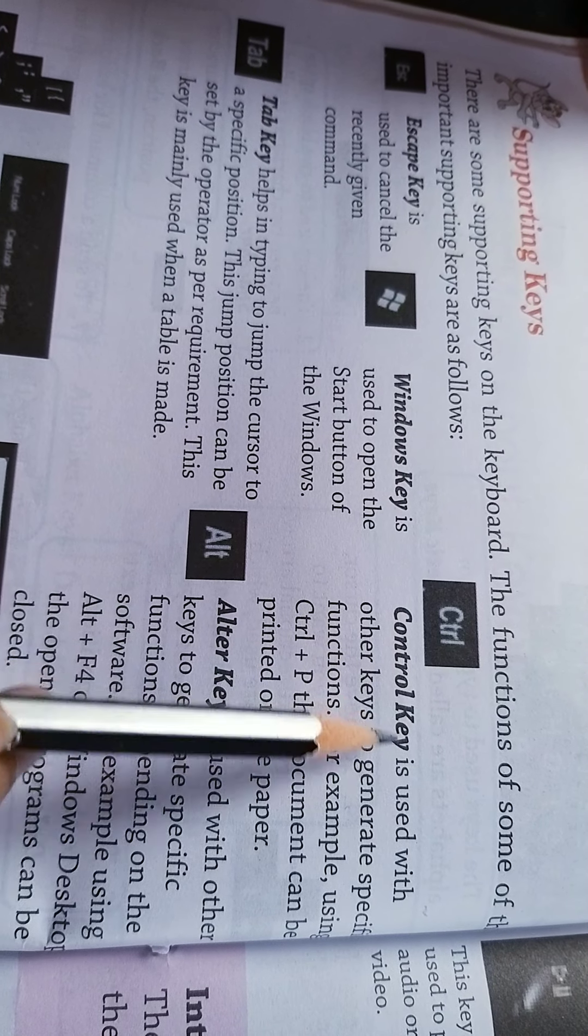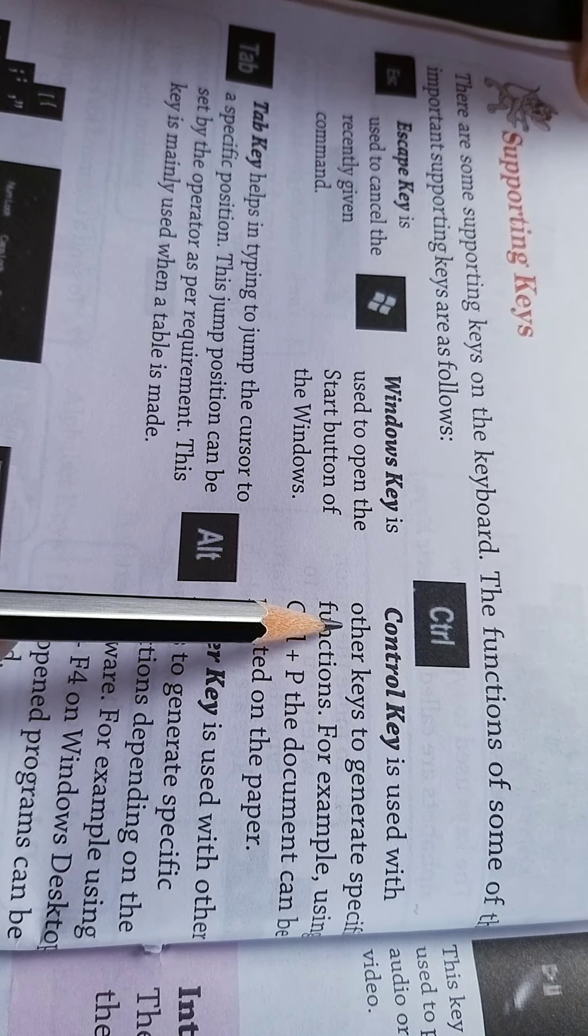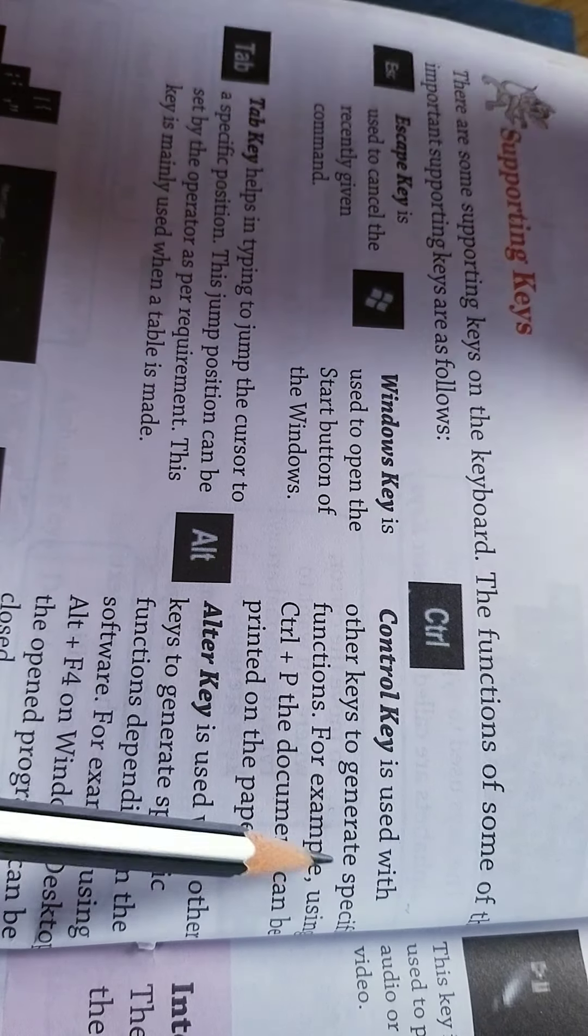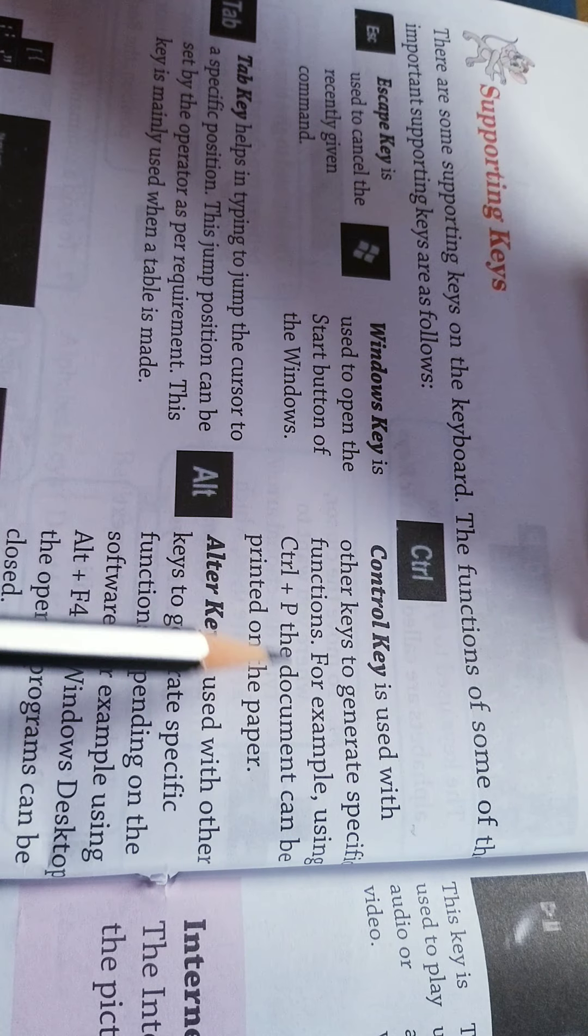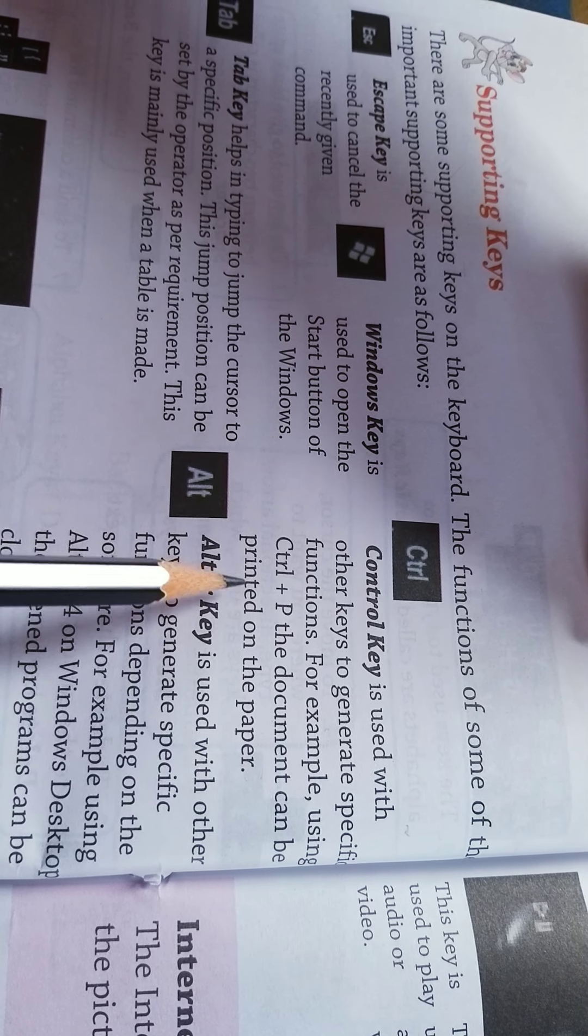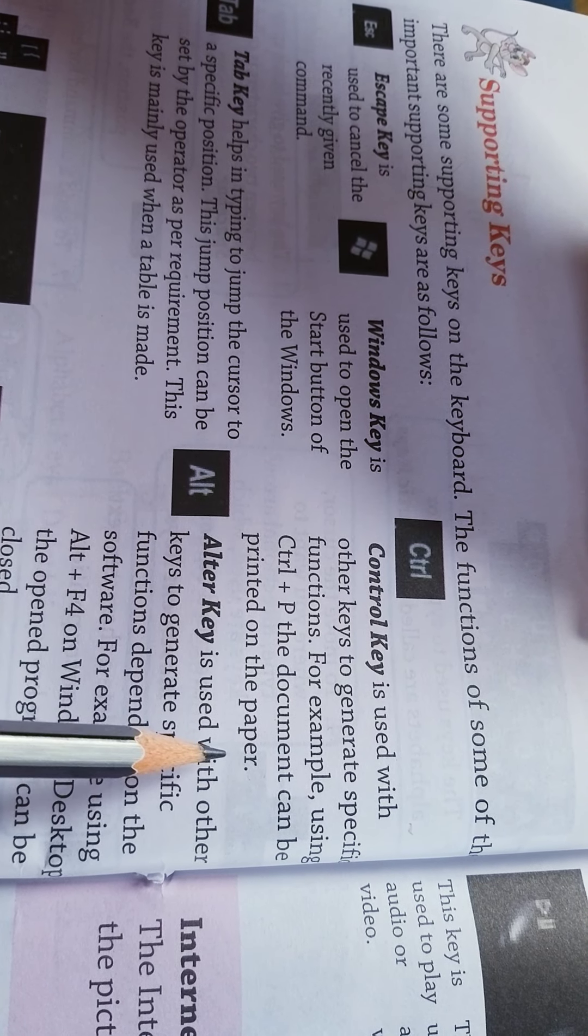Furthermore, Ctrl key is used with other keys to generate specific functions. For example, using Ctrl plus P, the document can be printed on the paper.